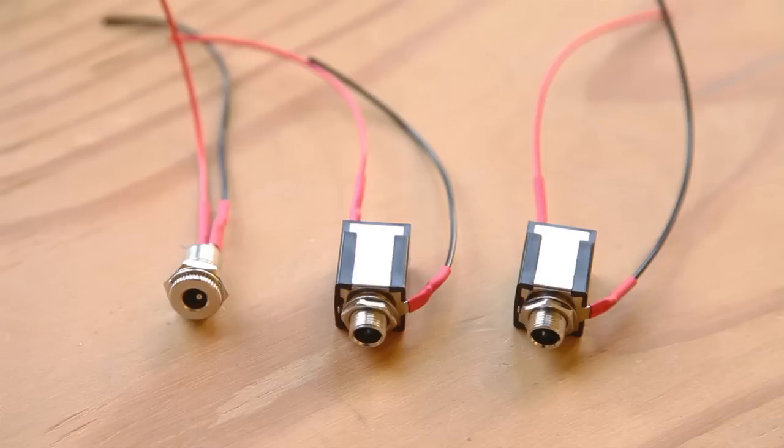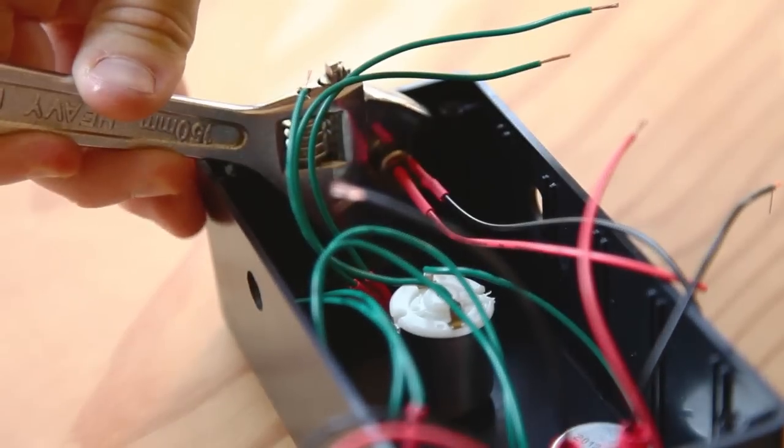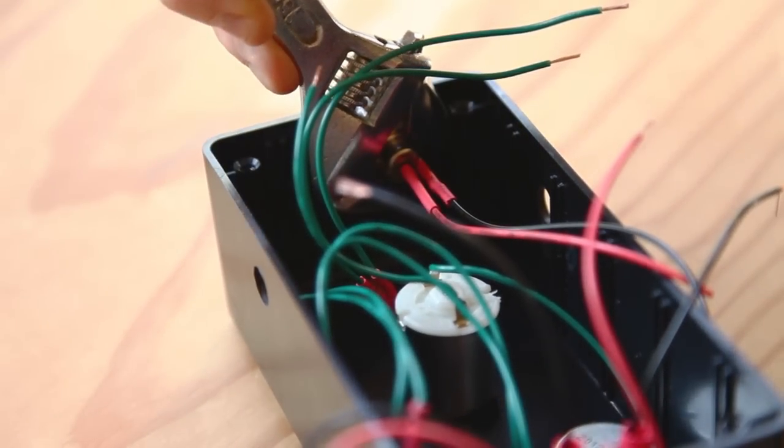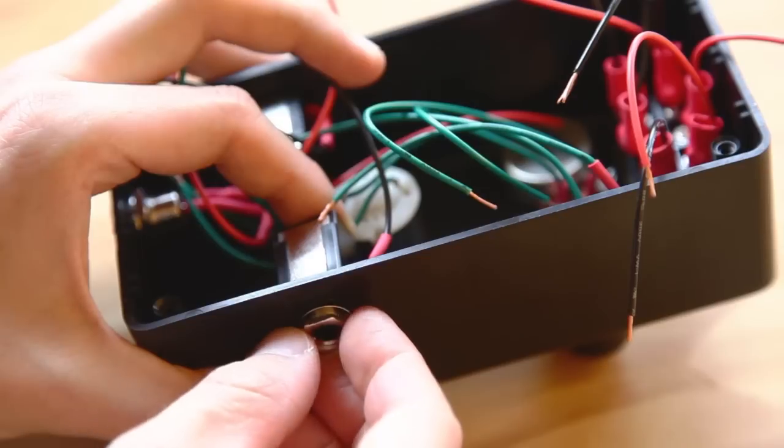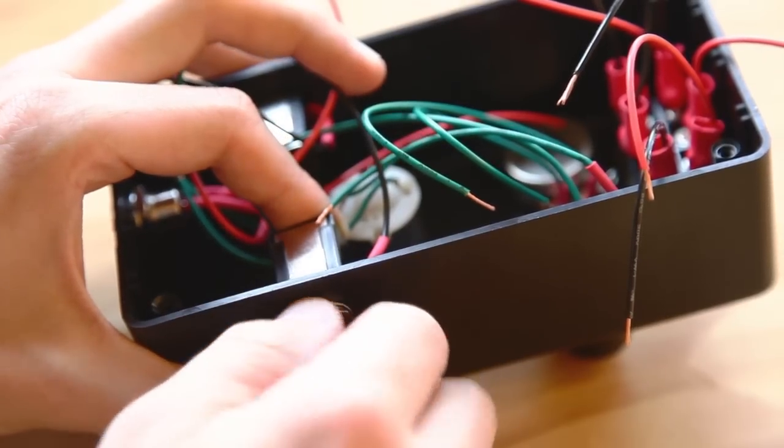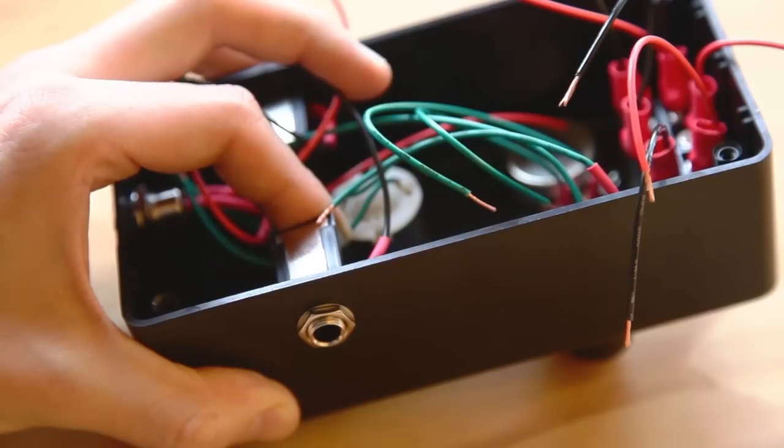Attach two leads to the DC power jack and each of the two phono jacks. In each case, ground goes to the outer or case contact. Solder and insulate with heat shrink. Insert the DC power jack through the top panel from outside and tighten it inside with the washer and panel nut. Insert the phono jacks from inside the enclosure, then secure them in place with the washer and panel nut.